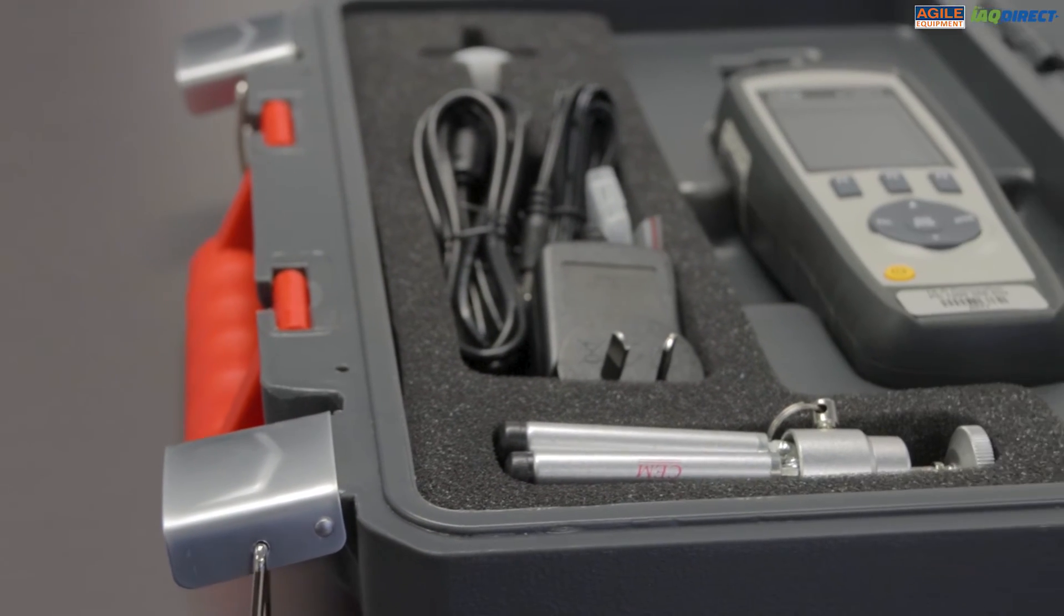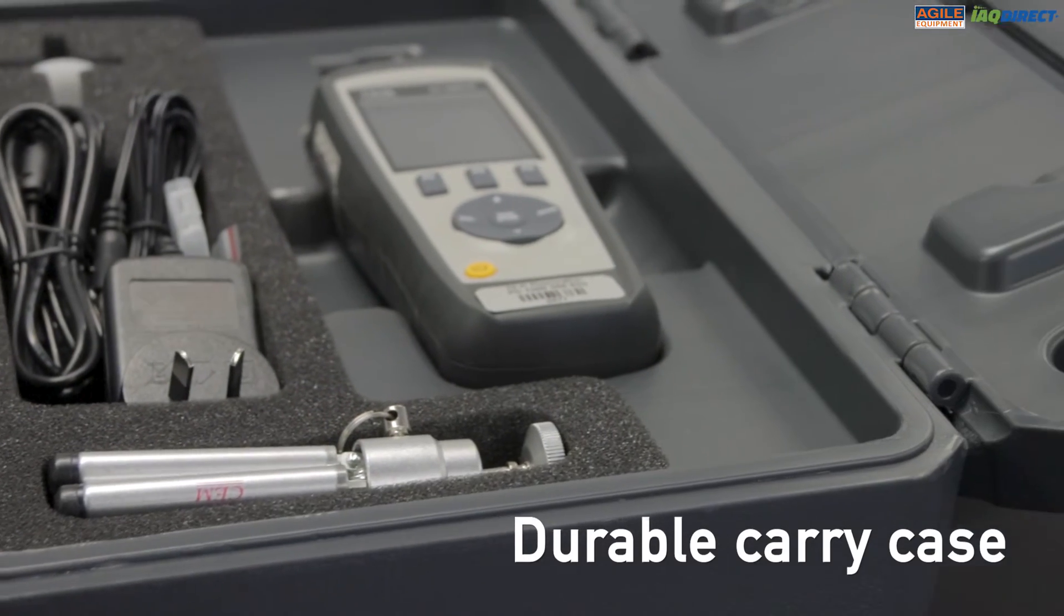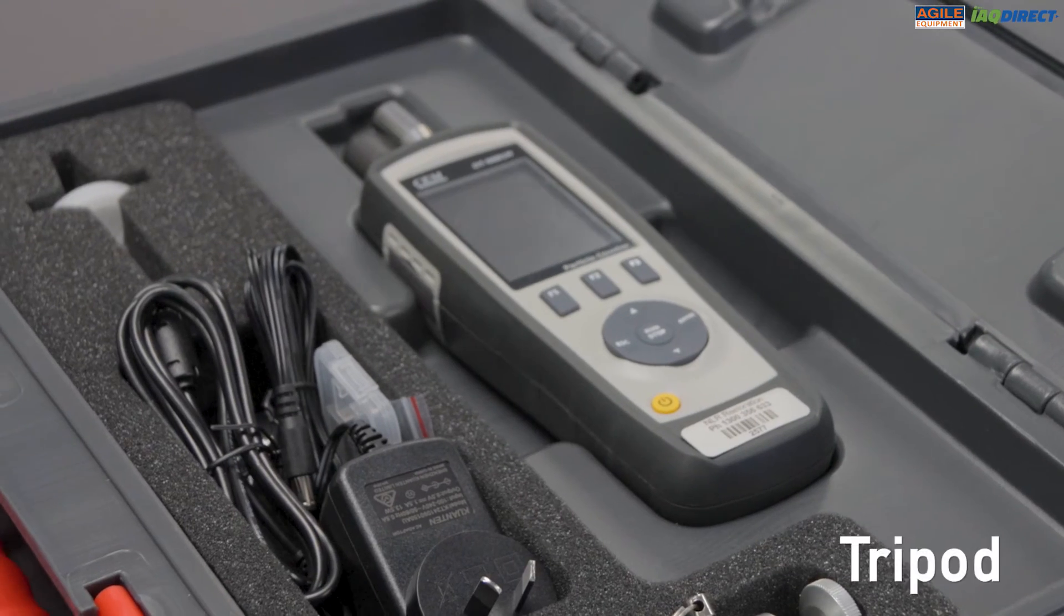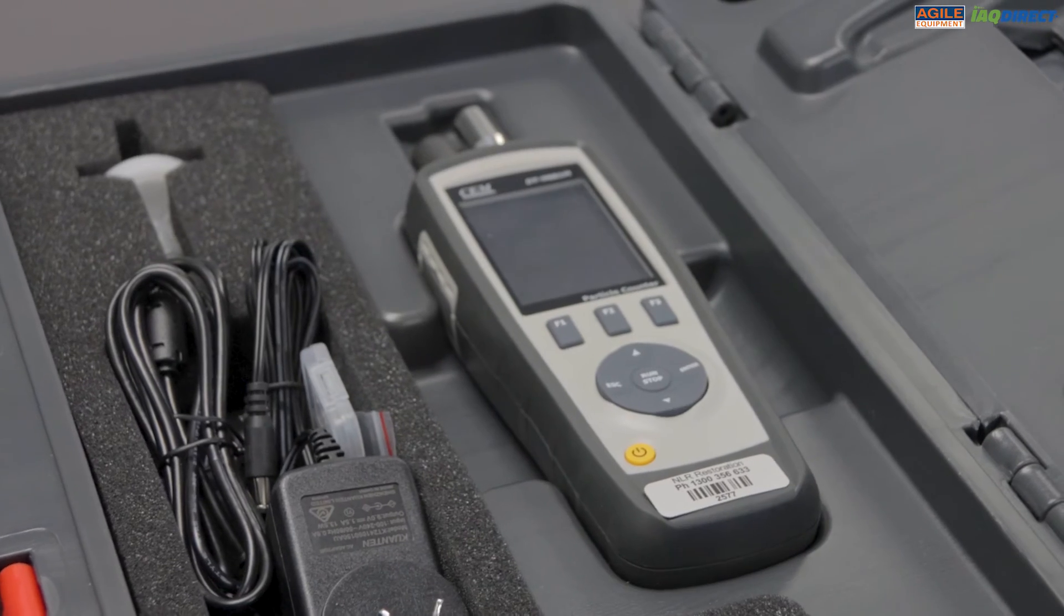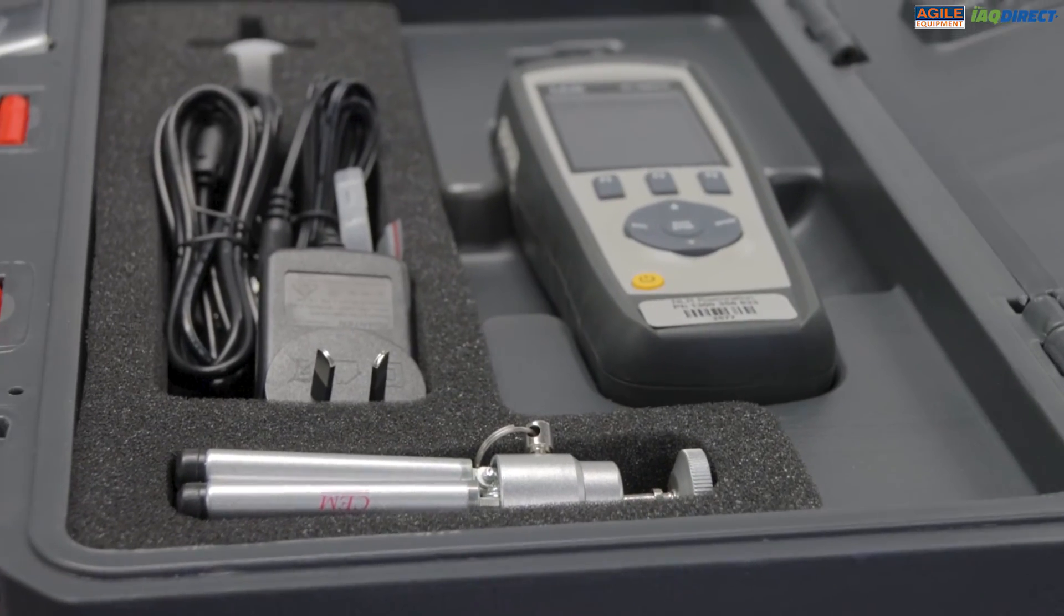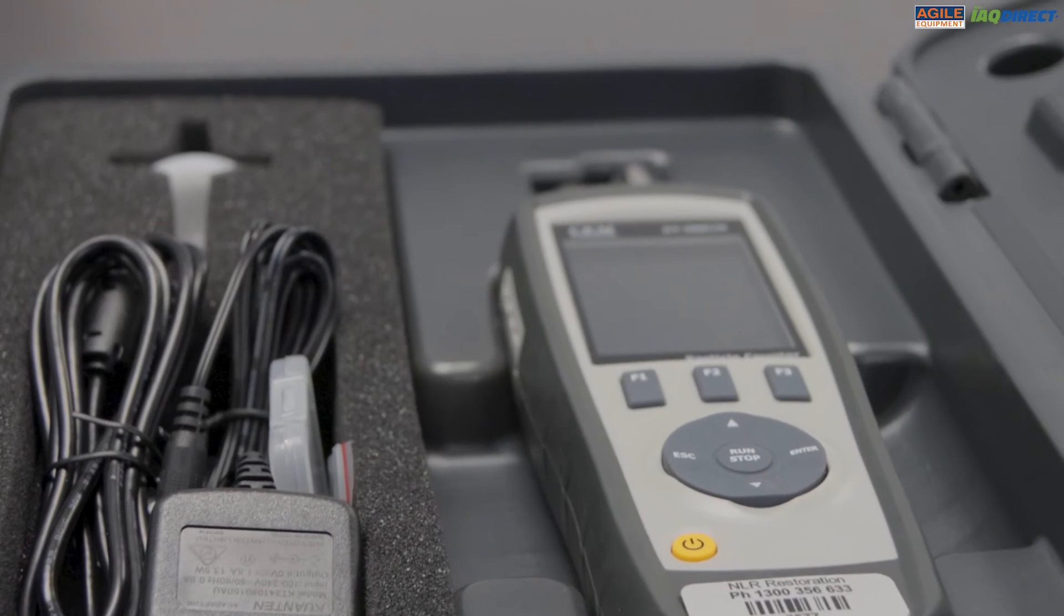When you purchase either model, the product includes a durable carry case, a battery and charger, a tripod, some data cables and a zero filter, which is used for filtering clean air when resetting data values on the meter.